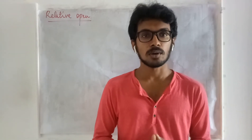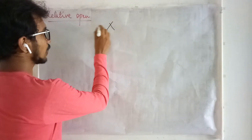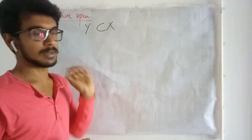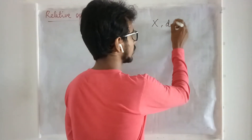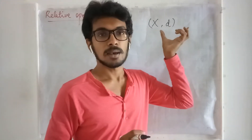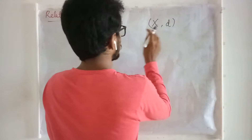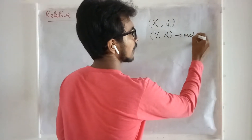Welcome to a lecture series on real analysis. In this lecture we are going to see something called relative openness. Let us consider a metric space X and a subset Y of this metric space. X is a metric space, which means a metric is defined on this set. With the same metric, you can form Y to be a metric space as well.